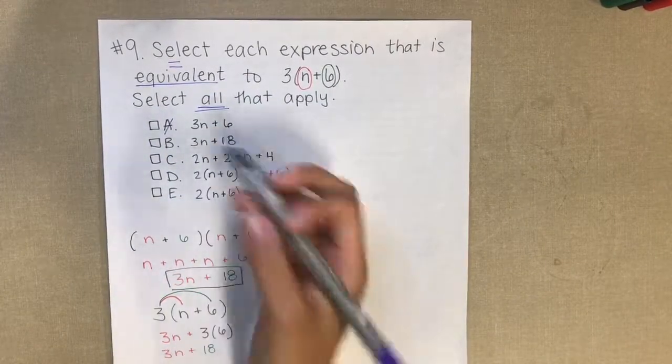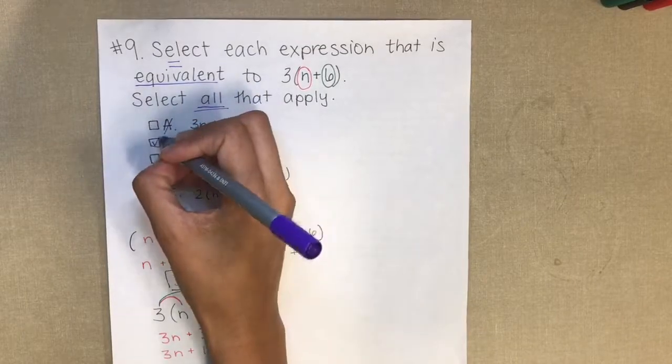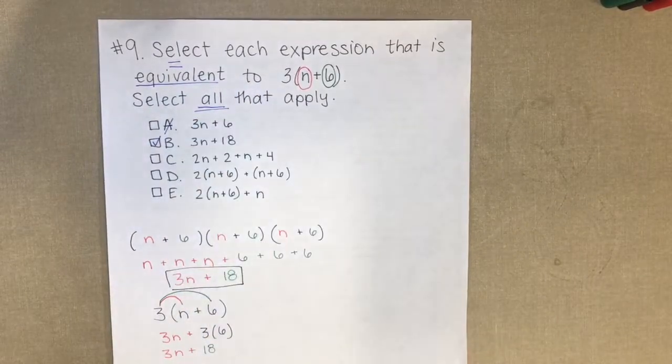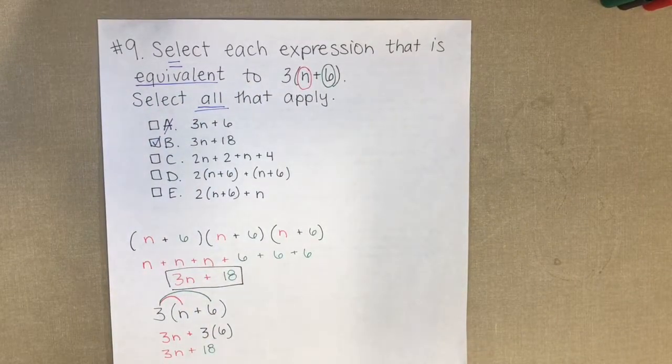Answer choice B is 3n plus 18. That's exactly what we got, so B is correct — we have one answer.